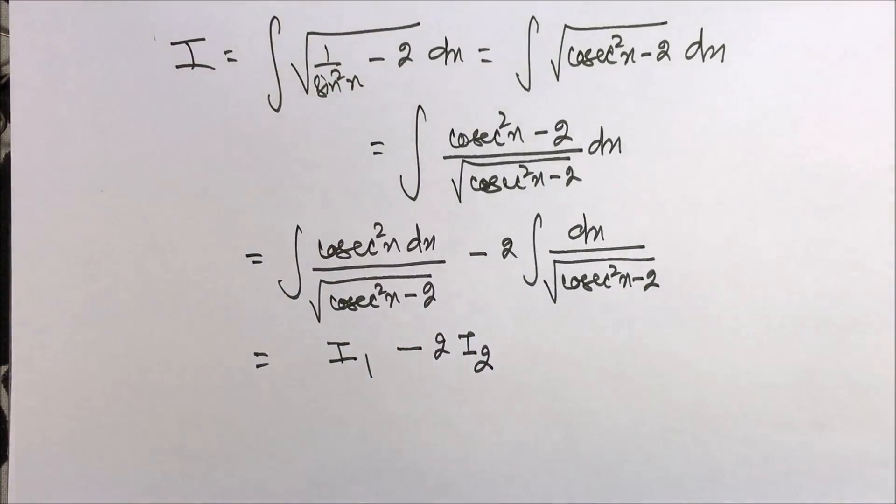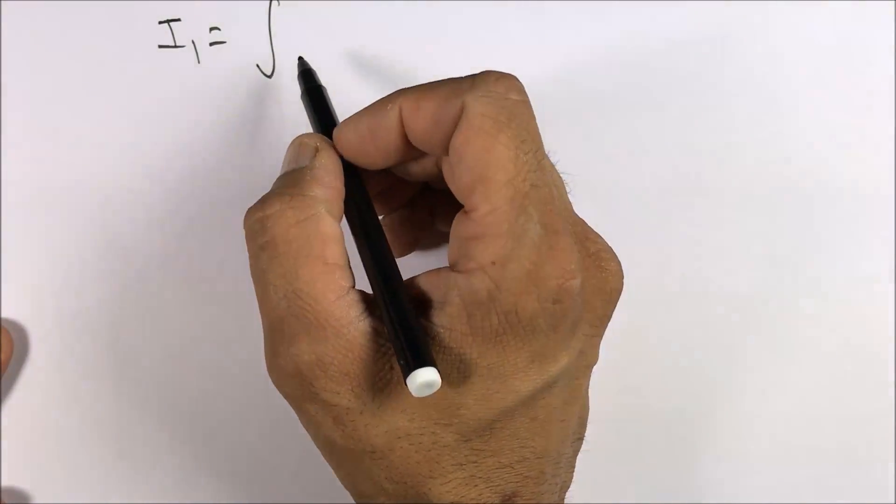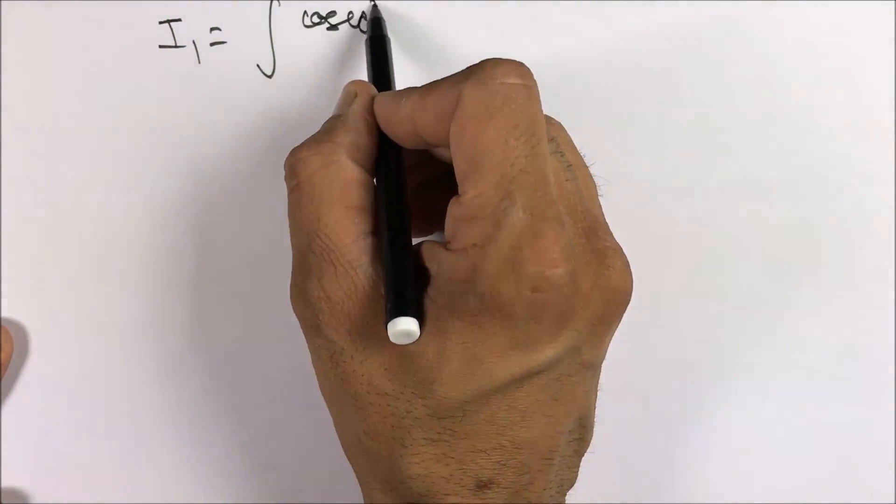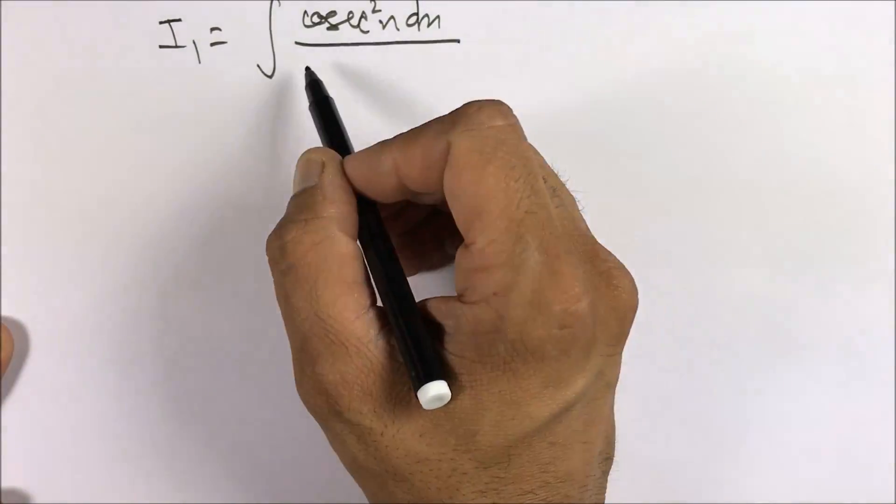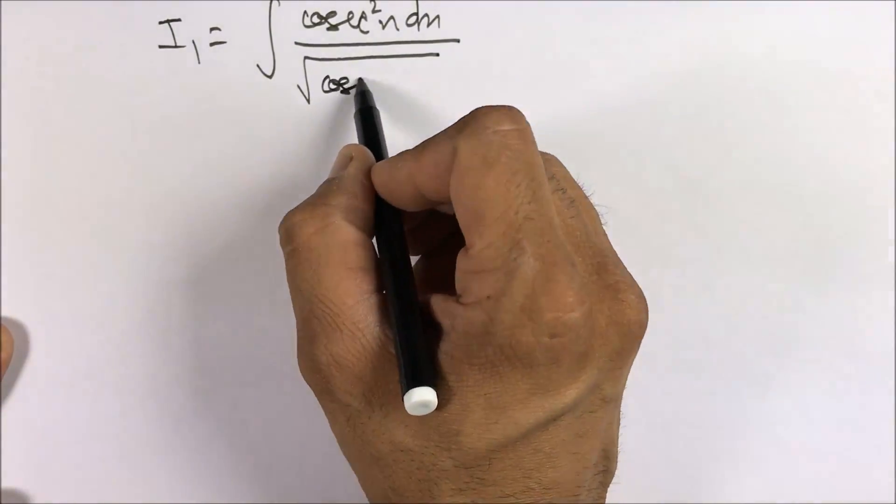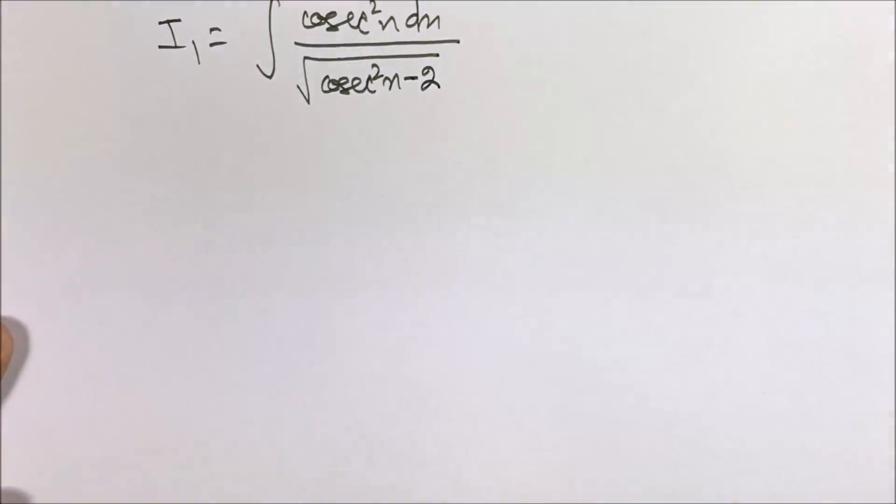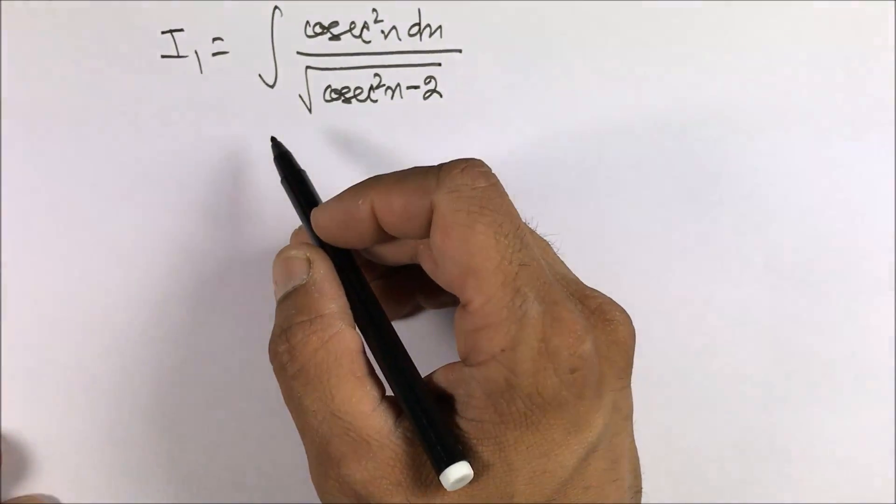Take them as I1 minus 2 times I2, and I will be solving I1 and I2 separately. So I'll be taking I1. Now you could see that if you convert cosecant square x of the denominator within the root to cot square form, you can easily put cot x equals t. So we apply that logic.